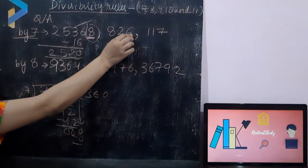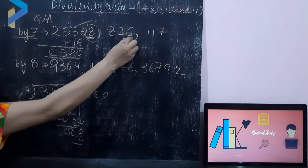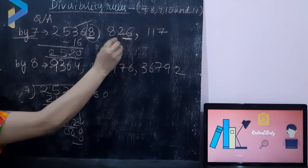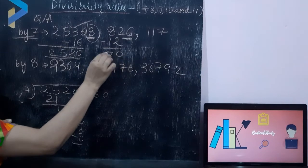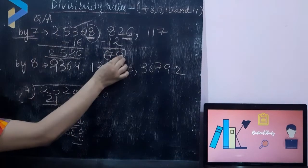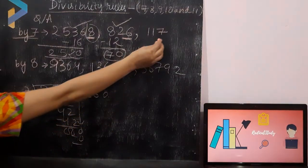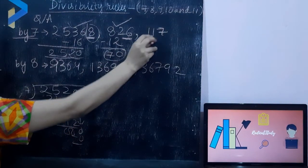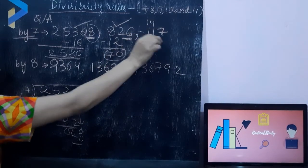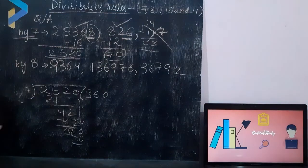Now checking the next number: double the unit digit — 2 times 6 is 12. Subtract 12 from 82, giving 70. 70 is 7 times 10, so this number is also divisible by 7. Now the next one: 2 times 7 is 14. 14 minus 11 is 3, which is not divisible by 7. So this number is not divisible by 7.